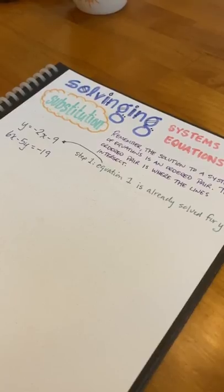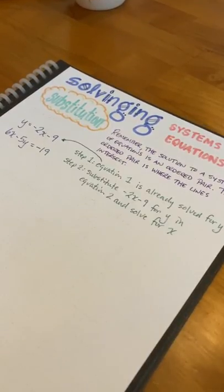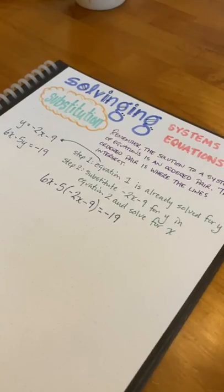So the problem is y equals negative 2x minus 9, and 6x minus 5y equals negative 19.